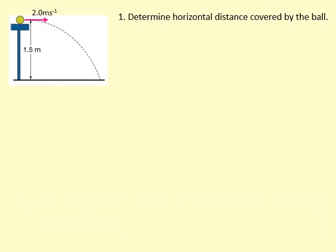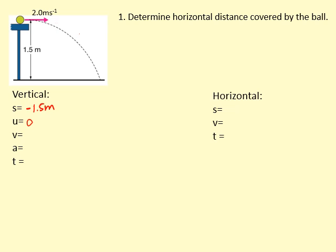In this question, determine the horizontal distance covered by the ball. We treat the horizontal and vertical motion completely separately. Vertically it's accelerating due to gravity, so we use SUVAT — constant acceleration. Horizontally it's moving at constant speed of 2 meters per second, so we use speed equals distance over time. Vertically it falls 1.5 meters downward, so displacement is minus 1.5 meters. The initial vertical speed is zero since it was fired horizontally, and acceleration is minus 9.81 meters per second squared.